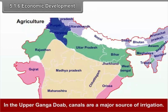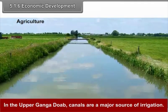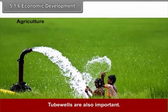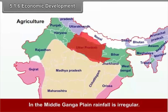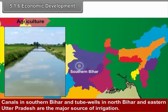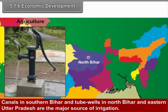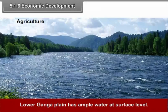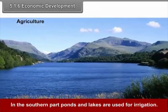In the upper Ganga Doab, canals are a major source of irrigation. The eastern Yamuna canal, the upper, middle and lower Ganga canals are important means of irrigation. Tube wells are also important. In the middle Ganga plain, rainfall is irregular. North Bihar has less irrigation while south Bihar has a large area under irrigation. Canals in southern Bihar and tube wells in north Bihar and eastern Uttar Pradesh are major sources of irrigation. The lower Ganga plain has ample water at surface level. In the southern part, ponds and lakes are used for irrigation.